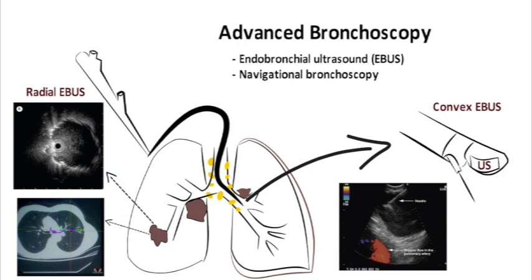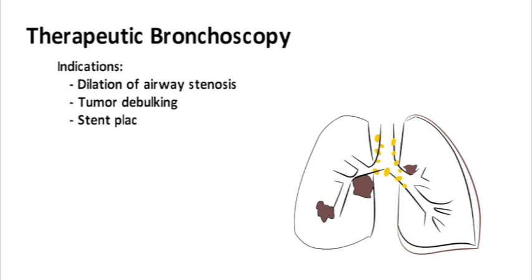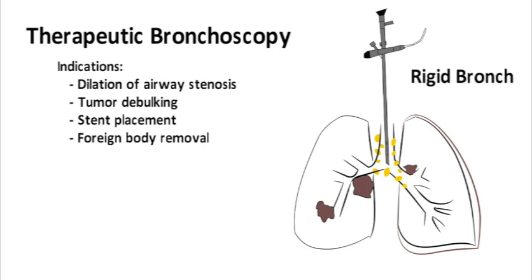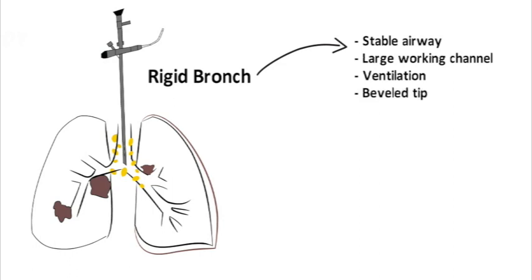The other type of system uses high-resolution CT scans to create a virtual bronchoscopic roadmap for the proceduralist. Therapeutic bronchoscopy comprises a number of procedures that treat benign and malignant conditions in the airways. Common indications include relief of airway stenosis, tumor debulking, stent placement, and foreign body retrieval. Therapeutic procedures can be performed with flexible and/or rigid bronchoscopes. The rigid bronchoscope simultaneously allows a stable airway, a large working channel for multiple instruments, and allows for ventilation. The beveled tip can be used as an instrument itself to dilate airway strictures or core out large airway tumors.